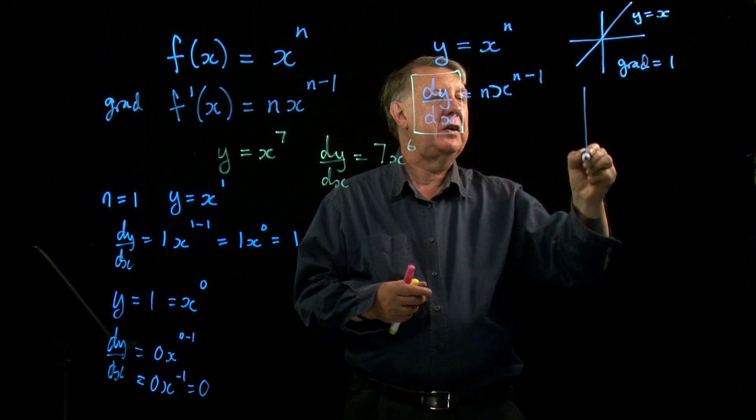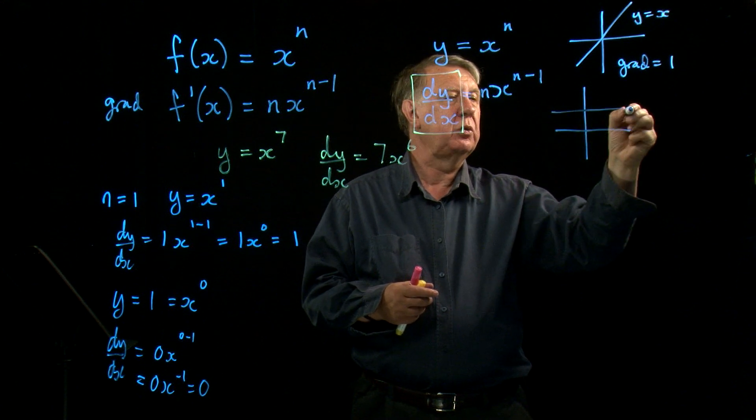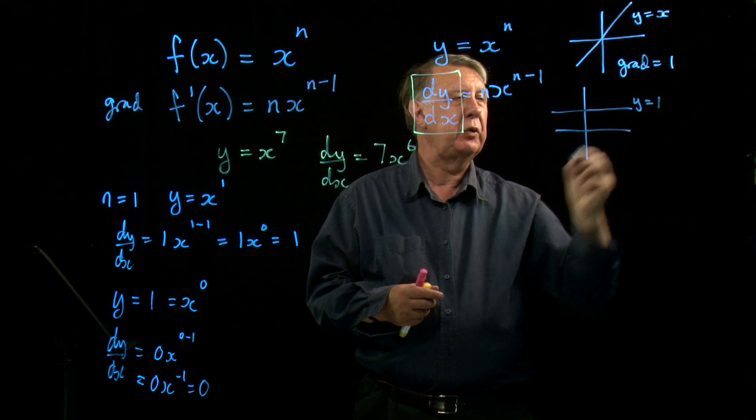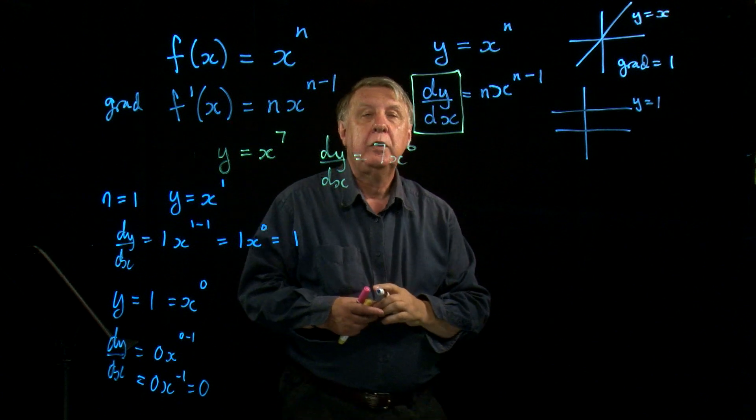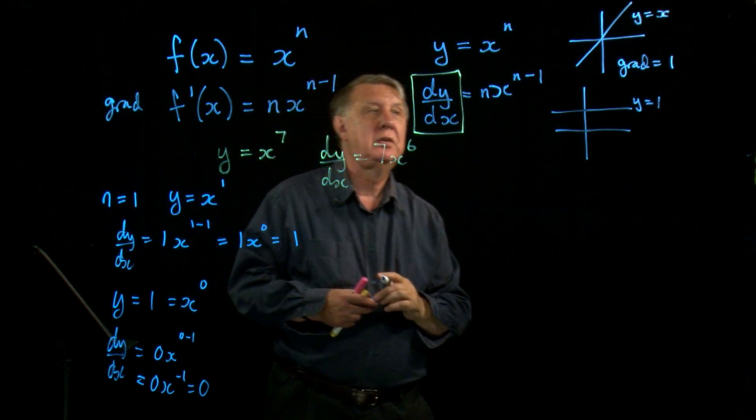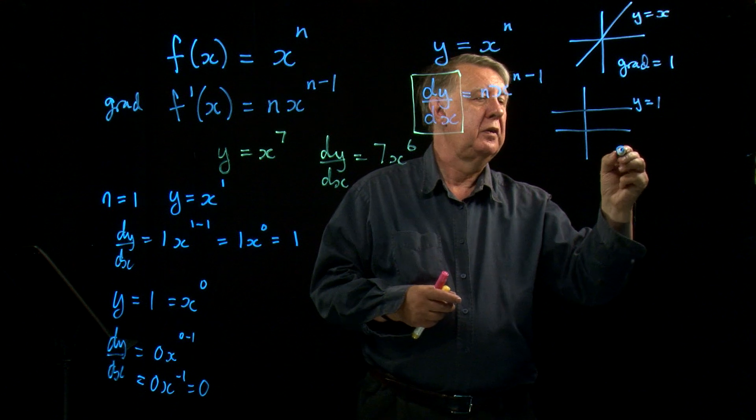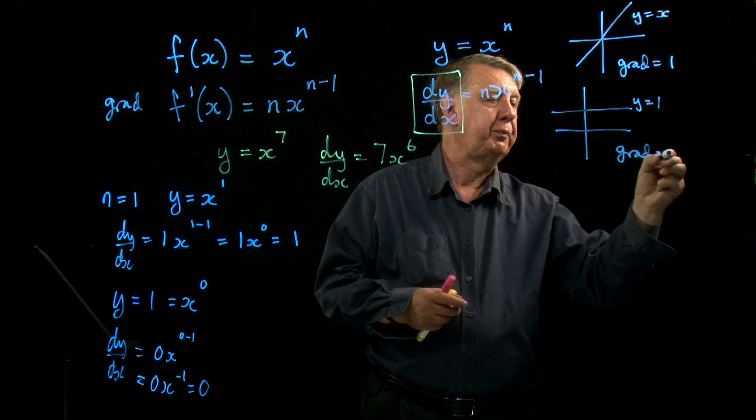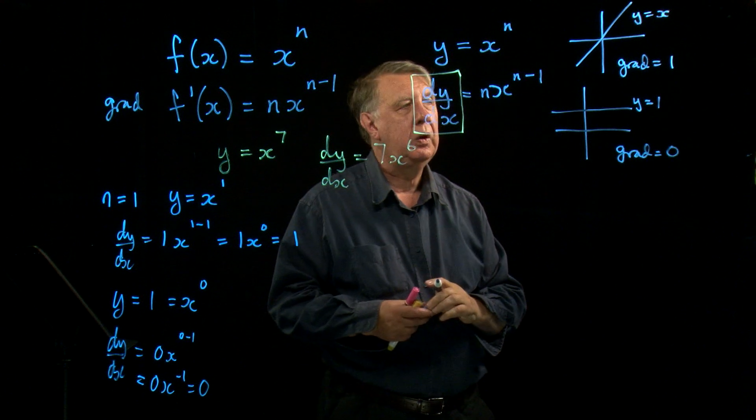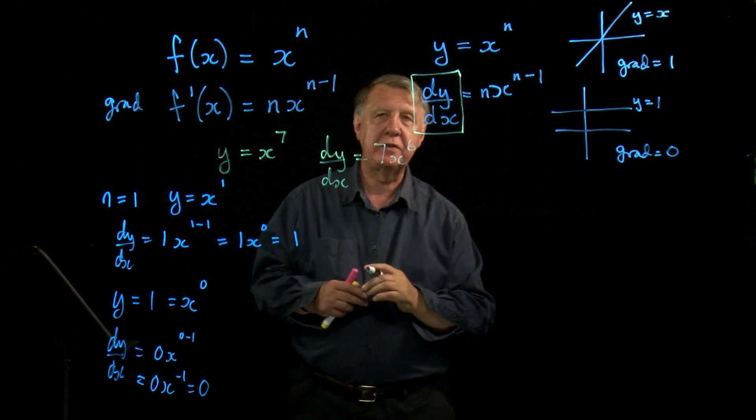And if I look at the line y equals 1, what does that line look like? Well, it's horizontal, it has no gradient, so the gradient is 0. So we need to bear in mind those two special cases.